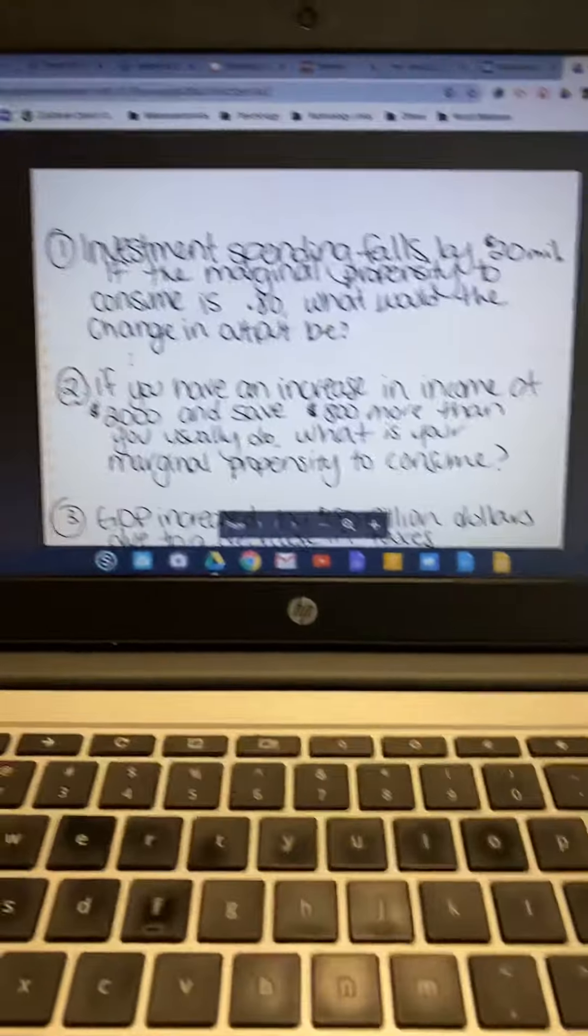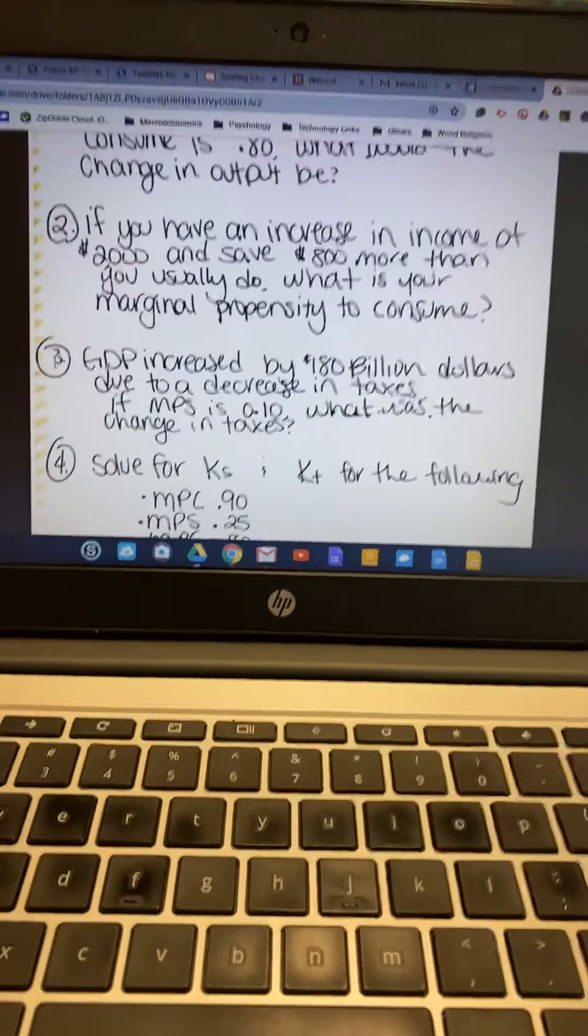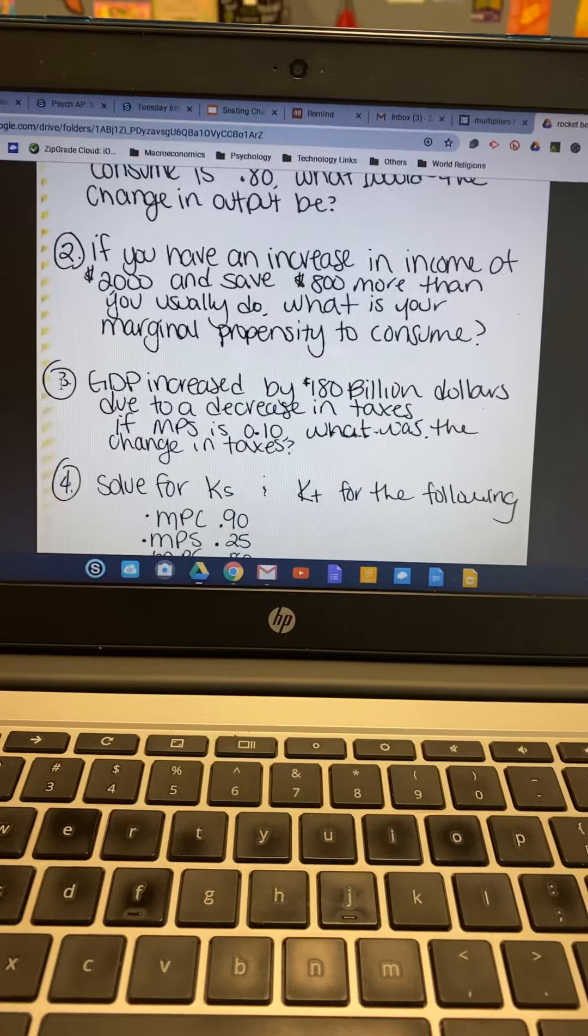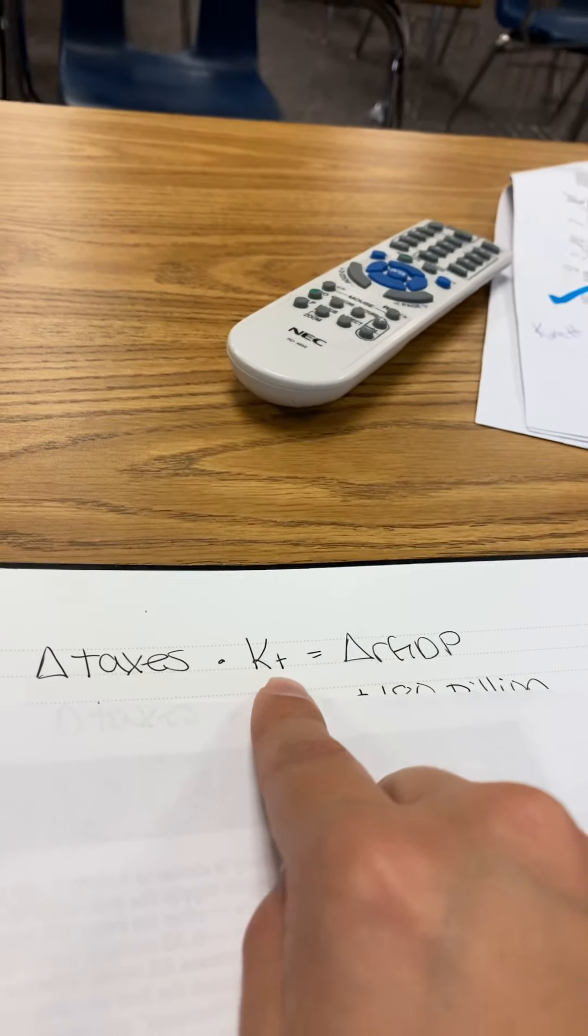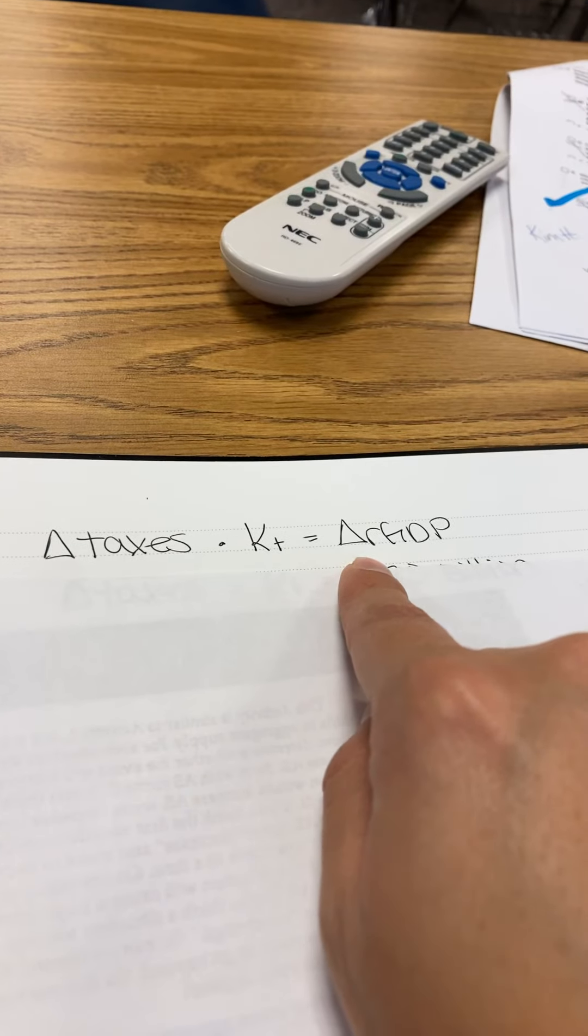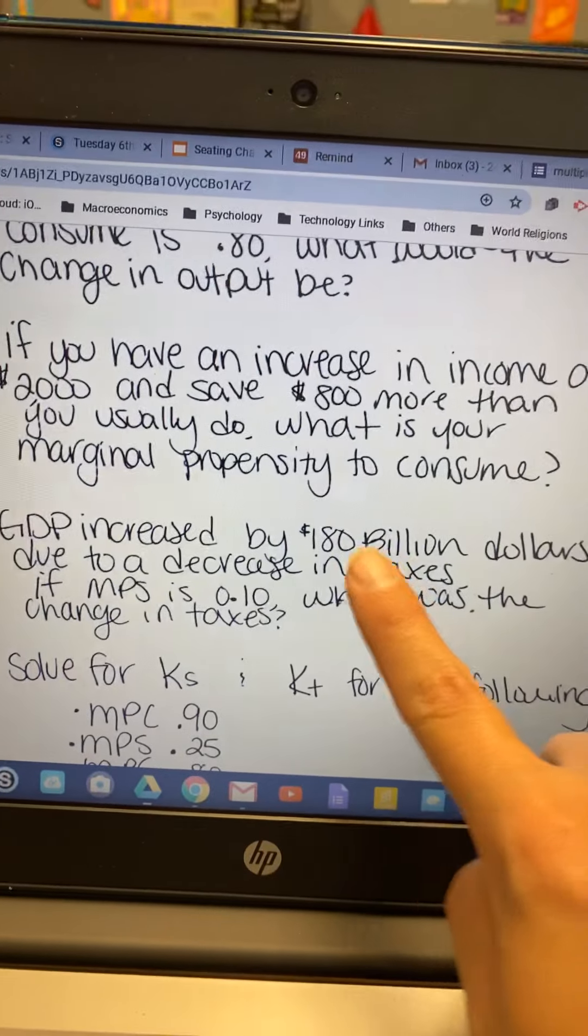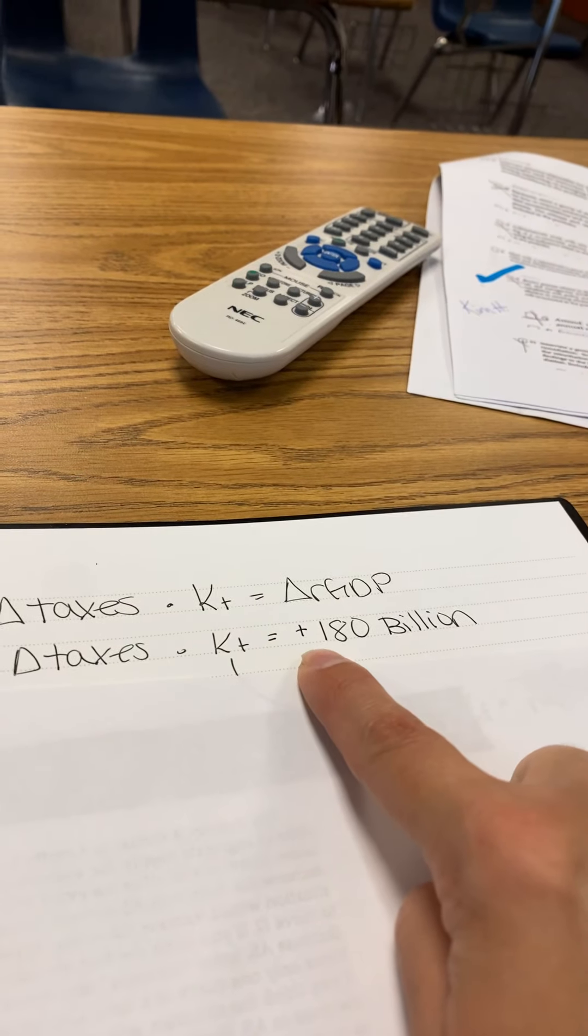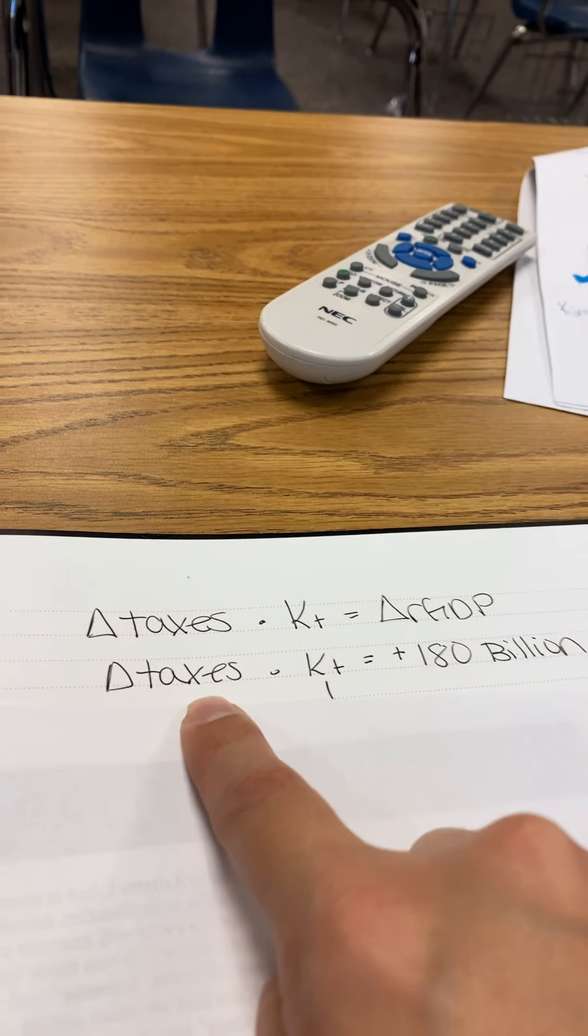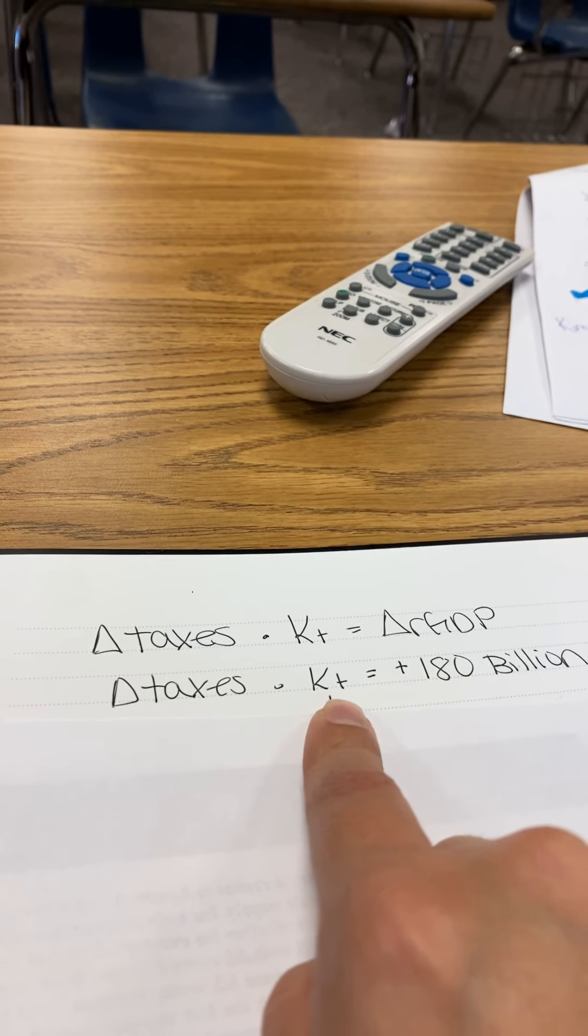The next question, question three, says GDP increased by $180 billion due to decrease in taxes. If the MPS is 0.1, what is the change in taxes? So in this problem, we're using the tax multiplier. The tax multiplier is different than the spending multiplier. It's change of taxes times KT gives you some sort of change in real GDP. GDP increased by $180 billion. I'm solving for taxes. I don't have KT specifically, but I can figure out KT with MPC or MPS.